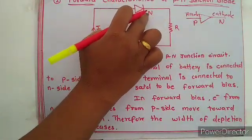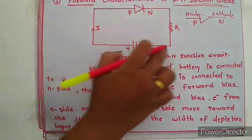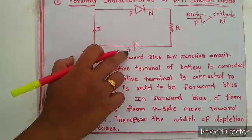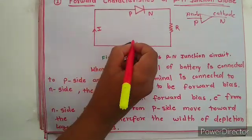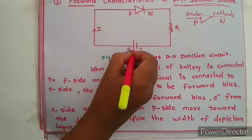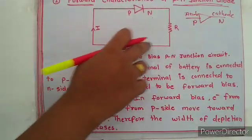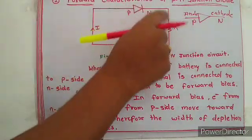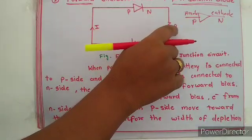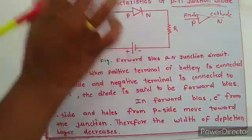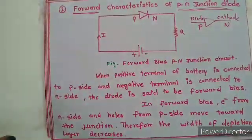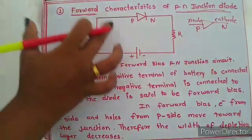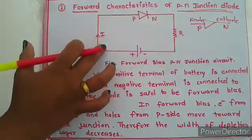This is the positive terminal and this is the negative terminal. Here, 'I' means the current flowing through the circuit and there is also resistance. As we saw in the experiment — the PN junction diode experiment — I had shown you the circuit connection there.